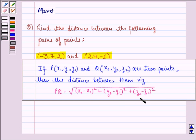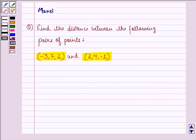So, using this formula, we find out the distance between the two given points. Let us start with the solution. Let the point P be (-3, 7, 2) and the point Q be (2, 4, -1).